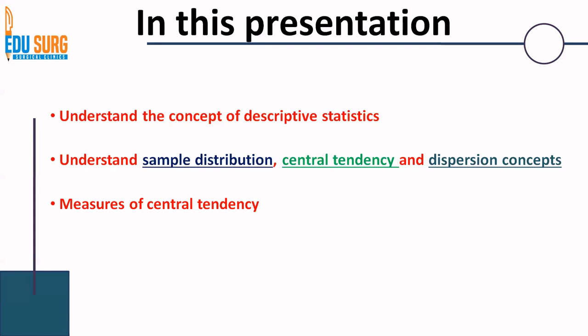You need to understand why we need a sample distribution, why we need a central measure, and why we need the extent of dispersion. In this video we are going to see the measures of central tendency, while dispersion measures and sample distribution will be covered in detail in the upcoming videos.